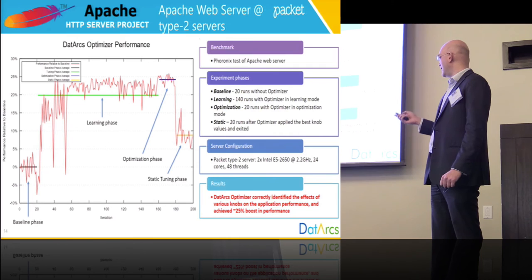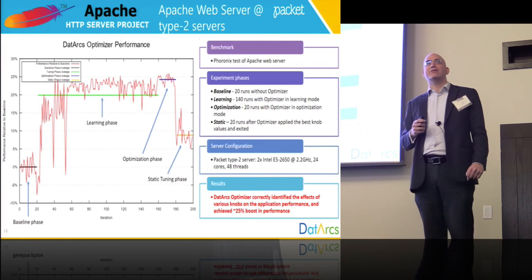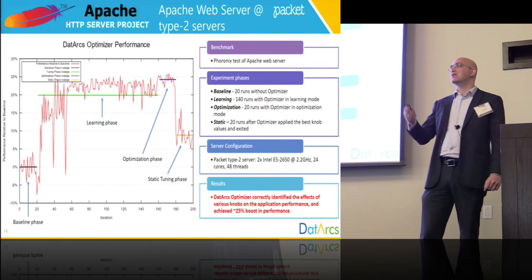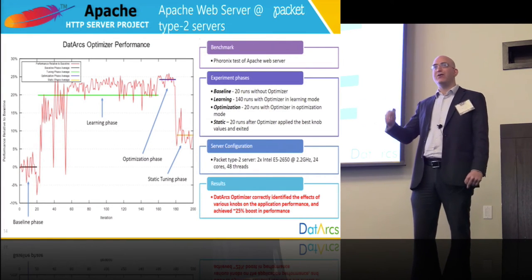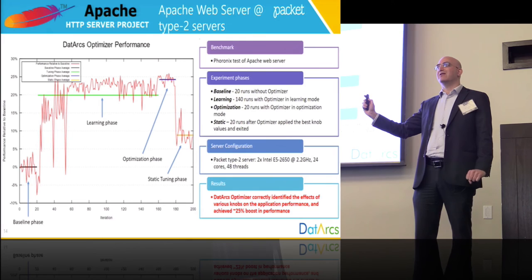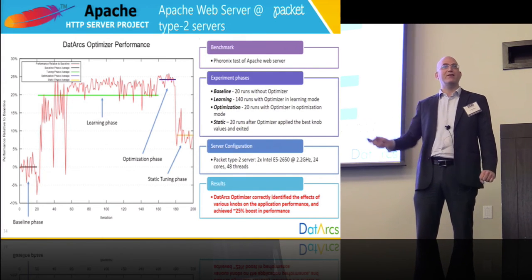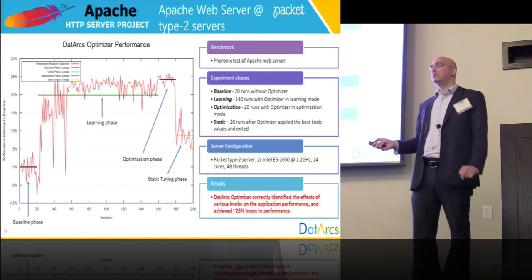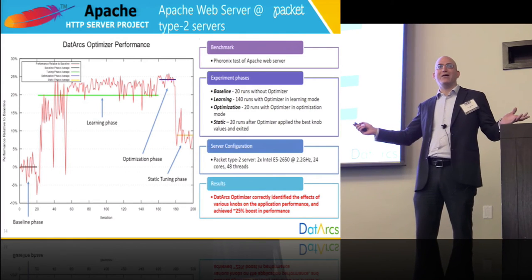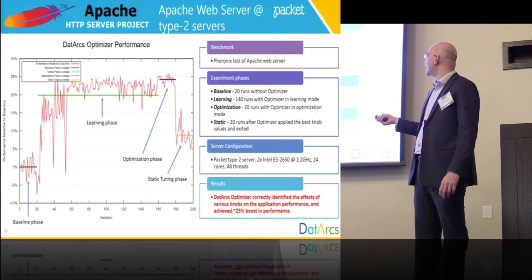The third phase we call the optimization phase. We turned off several parts of the machine learning algorithms and exploration in order to squeeze more performance. This can be done if you know your application will not change. Here we are already at 24.5%.